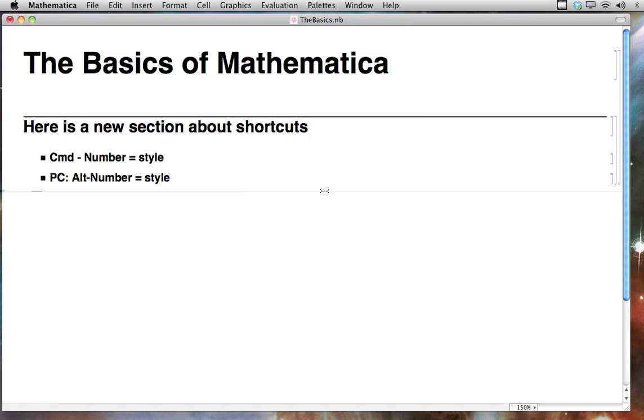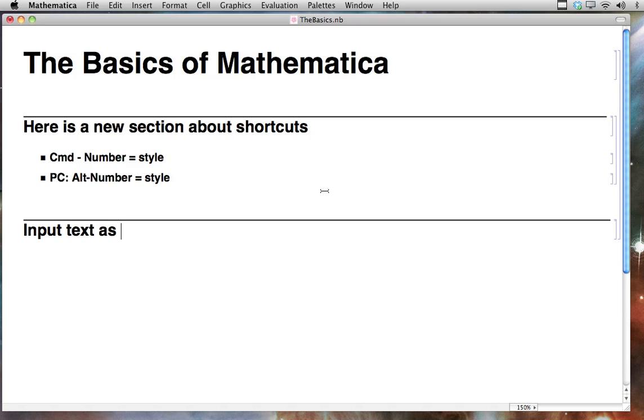Another thing we can do in Mathematica is use that input text as an equation. If I go down to this section, why don't I make a new one with command 4, on a PC that would be alt 4. This shows input text as math. Of course, Mathematica should be able to do math, and it does some incredible equations. We'll just go with the most basic one here.